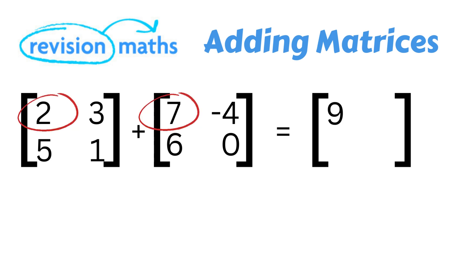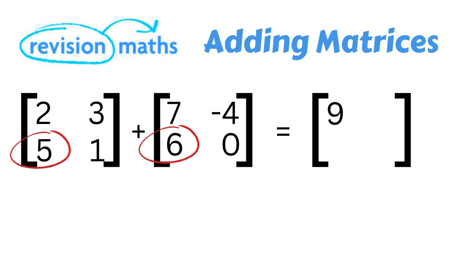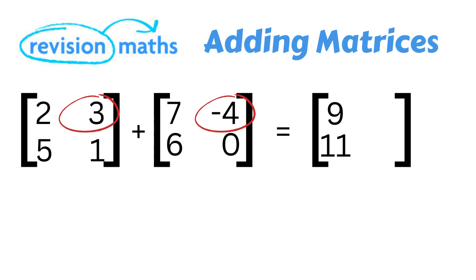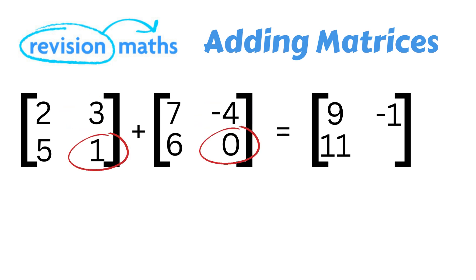We then move down to the second row in the first column — in this case a 5 — and add this to the 6, which is the second row, first column of the second matrix, giving us 11. Then we move on to the second column and add the 3 to the minus 4, which gives us a minus 1. To complete this matrix we add the 1 to the 0, which gives us a 1. This therefore completes the answer.